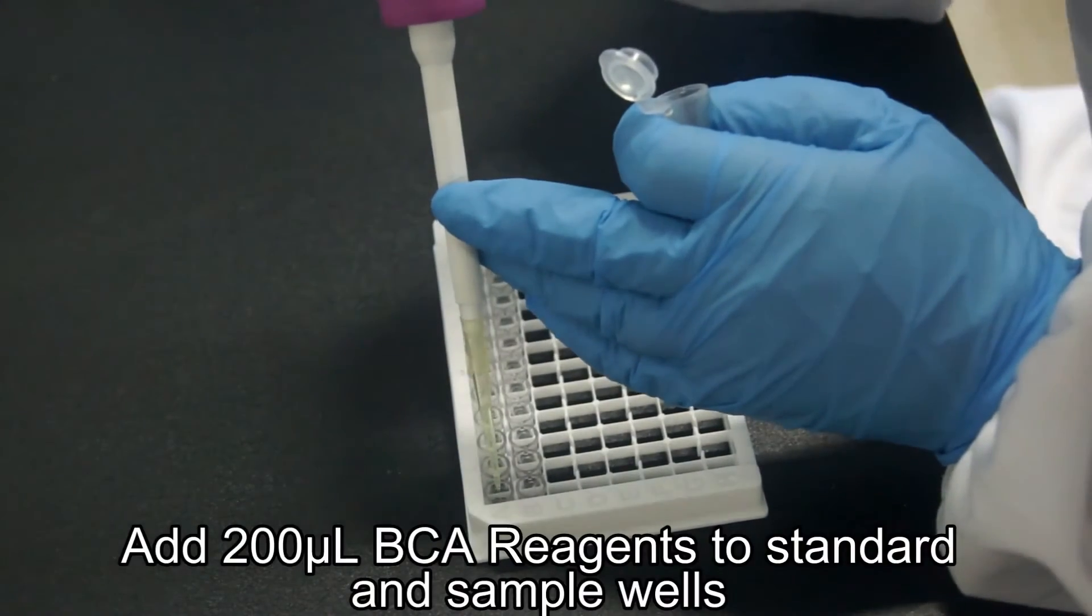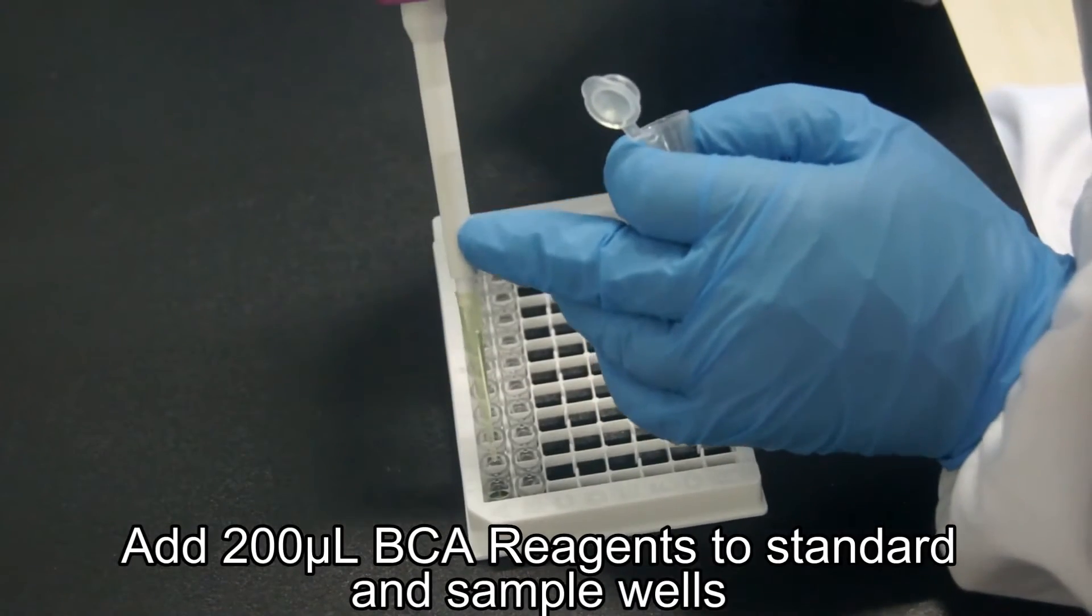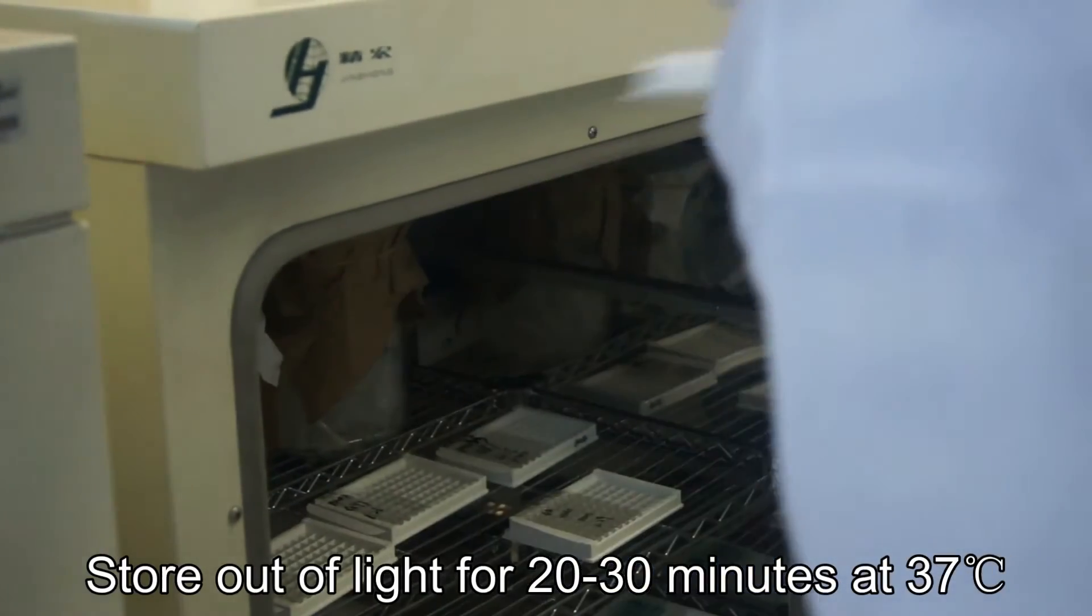Add 200 microliters of BCA reagents to the standard and sample wells. Store out of light for 20 to 30 minutes at 37 degrees centigrade.